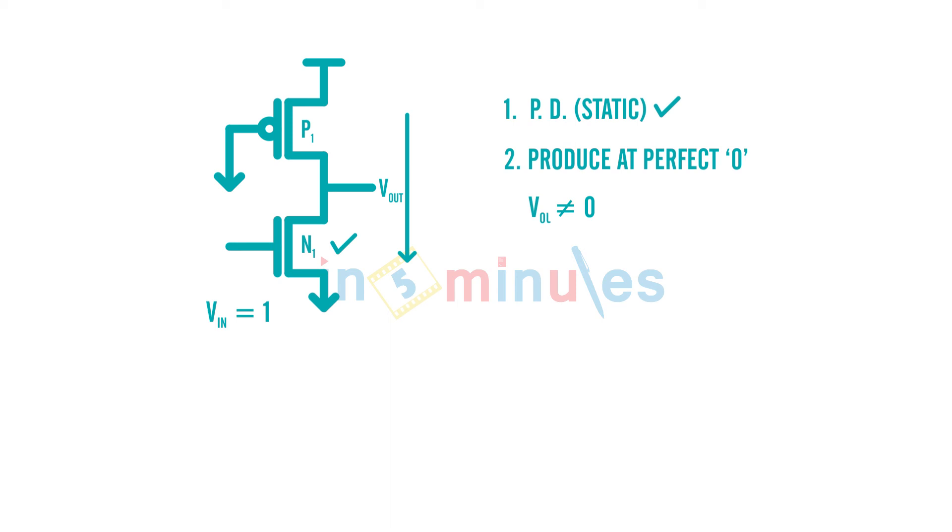So V_OL is not equal to zero. Third thing is when both of them are on, they both are trying to pull the output towards their respective cells. This is called output contention. Contention is when two are trying to access one and both of them are fighting for that.